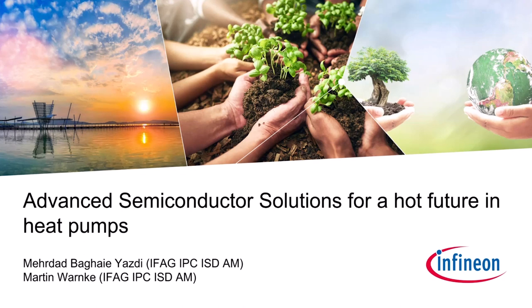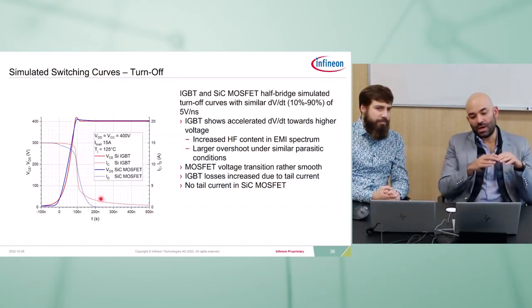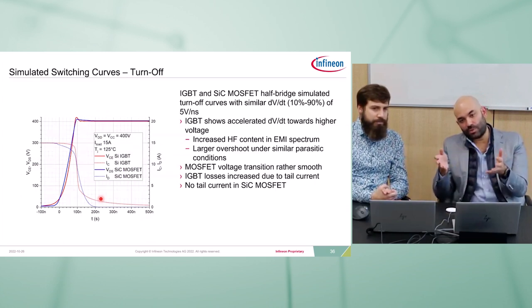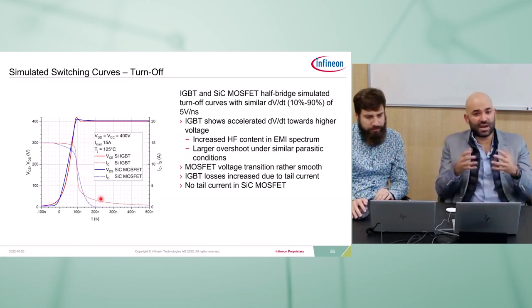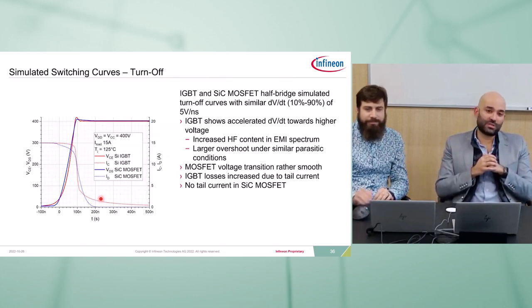Q&A — Do you have a representation of energy losses versus time to see the relative losses for the tail current versus the main switch loss? We don't have one representation here, but when we simulate or measure, you can set the duration and see how losses evolve. The tail current decays to a certain extent when the bipolar charge is completely depleted, then on the next cycle it appears again. That might generate cumulative heat. If somebody wants additional measurements or simulations, we're always open to provide them.